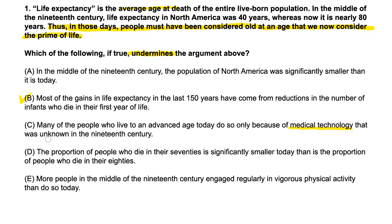Let's look at D. D says: the proportion of people who die in their 70s is significantly smaller today than the proportion who die in their 80s. So this is saying that people are dying at an older and older age — which actually supports the conclusion that people must have been considered old at an age we now consider the prime of life. But we're looking to undermine the conclusion, so it's not D.